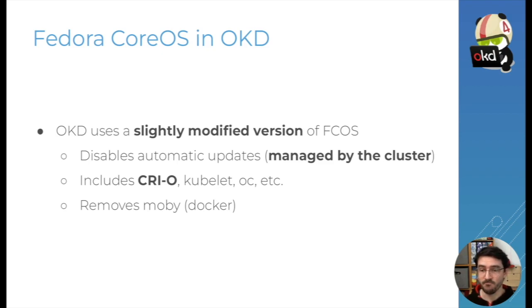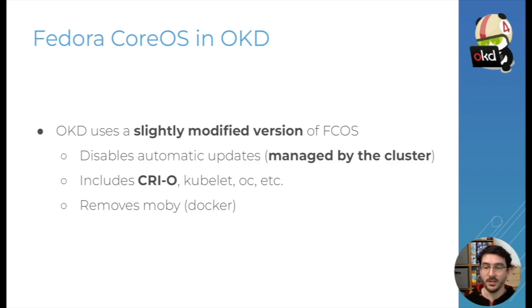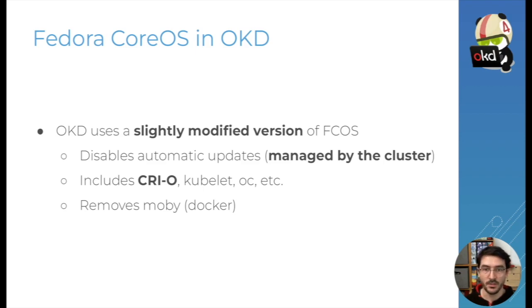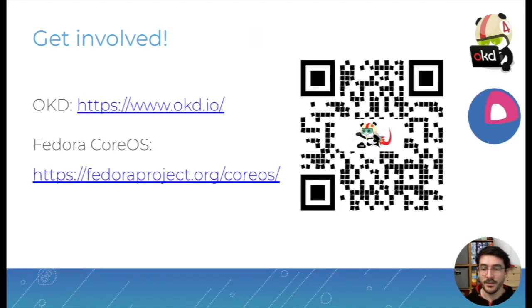So what's different about Fedora CoreOS in OKD compared to standalone Fedora CoreOS? OKD uses a slightly modified version. First, the automatic updates are disabled in OKD because node updates are managed by the cluster — nodes get updated as part of cluster updates, not individually. Fedora CoreOS in OKD also includes CRI-O, the Kubelet, the OC command, and some other tools not part of Fedora CoreOS by default. It also removes Moby/Docker because it's not used in OKD.